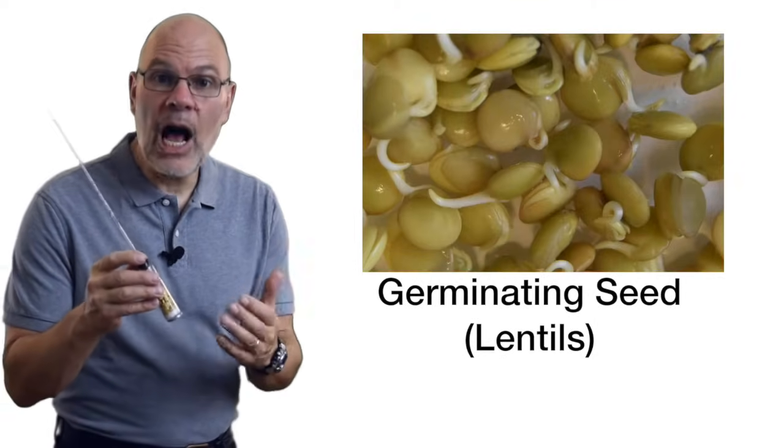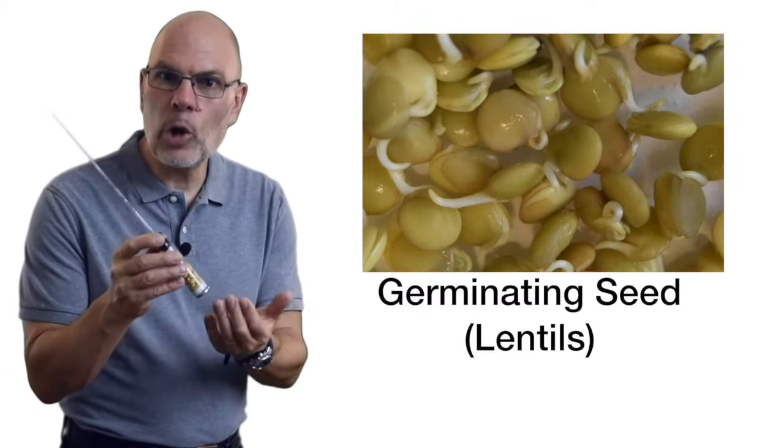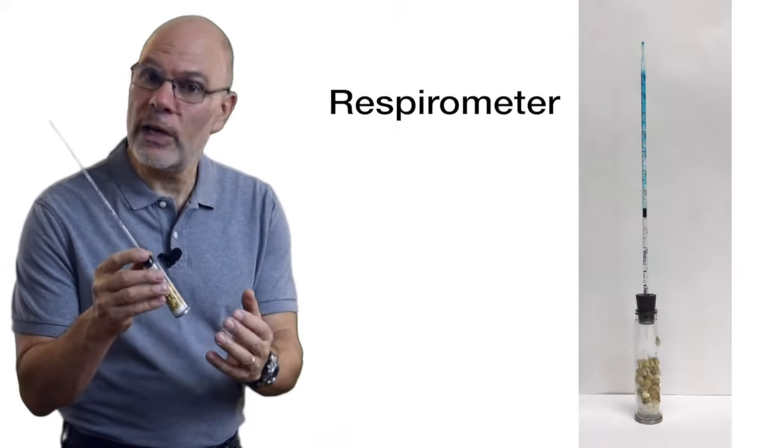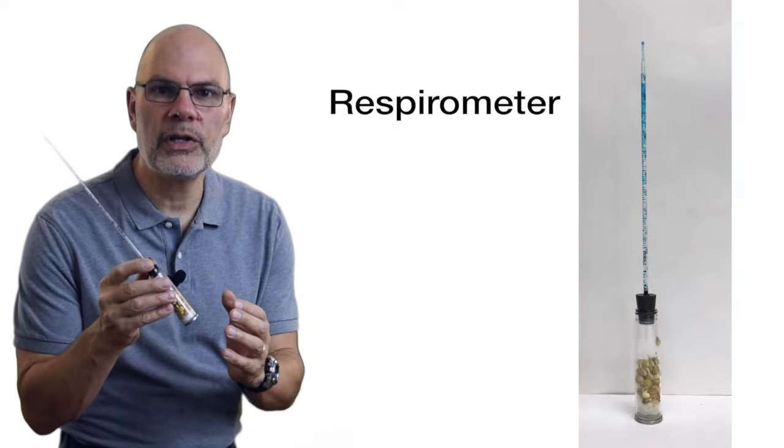In a high school or college biology lab, with a small organism like a germinating seed, we can measure the rate of respiration with a device called a respirometer. Here's how it works.